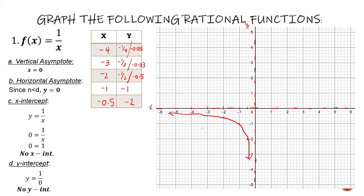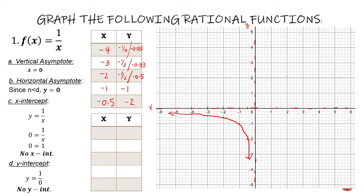The graph will look like that. If you notice, the graph will get closer and closer to the vertical asymptote, but it will never touch the vertical asymptote. We are not done yet, because there are still values on the right of the vertical asymptote. So let's get x values from the right of the vertical asymptote.